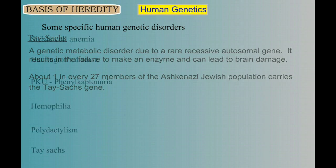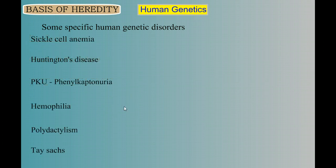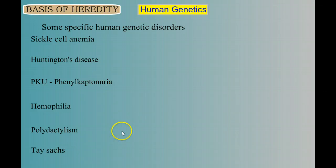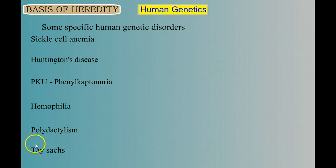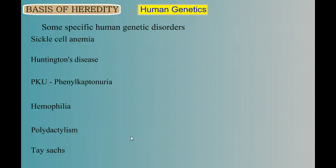So there we have just a sampling of different types of genetic disorders in humans: one that shows codominance, one that's lethal and dominant, a couple of metabolic disorders, a sex-linked disorder, and polydactylism. That brings an end to our discussion on genetics and this final discussion on human genetics and human genetic disorders. If you have any questions, leave them in the comments section below the video, and I hope you learned something.